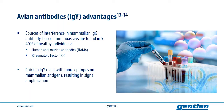The use of chicken antibodies in Gentian's turbidometric assays minimizes this interference and thus the likelihood of false positive results, because IgY antibodies do not react with human anti-murine antibodies, rheumatoid factor, or components of the human complement system.